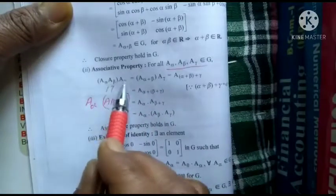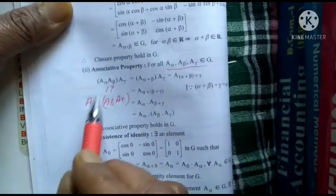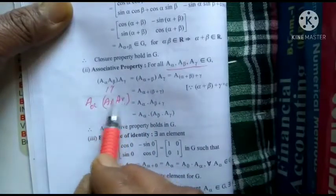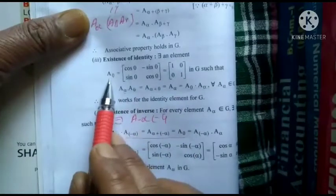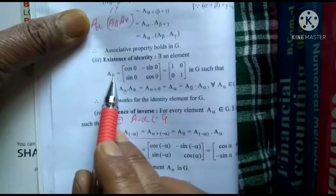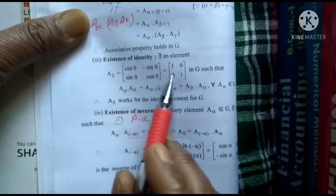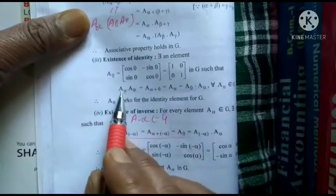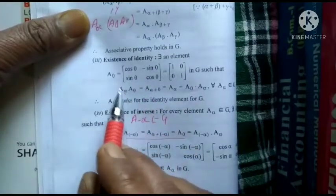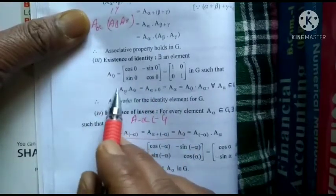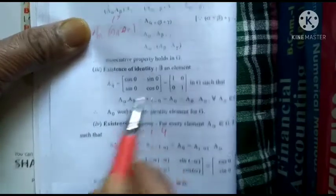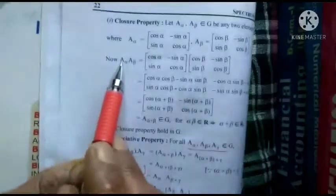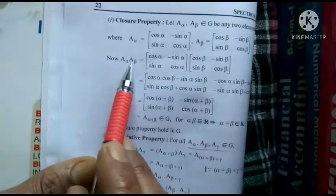Since A(α)·A(β) = A(α+β) ∈ G, we can directly write A(α)·A(β) = A(γ) ∈ G. Next is the existence of identity element: there exists an element A(0). Put α = 0 here; the identity element A(0) satisfies A(α)·A(0) = A(α+0) = A(α).